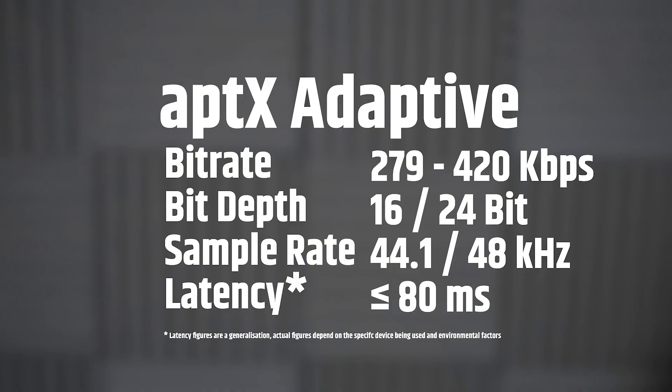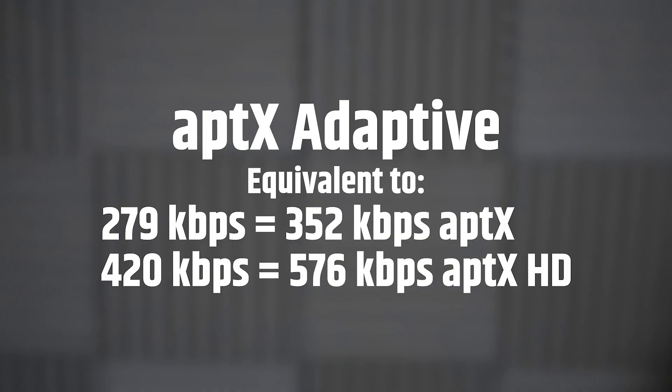Next up, we have AptX Adaptive, the newest next-gen version of AptX, which aims to provide a more stable and scalable low-latency codec with no compromise to fidelity. AptX Adaptive supports an adaptive bit rate scaling dynamically between 279 kbps and 420 kbps, as well as both 16 and 24-bit depths and 44.1 and 48 kHz sample rates. Qualcomm claims audio fidelity equivalent to AptX at 352 kbps and AptX HD at 576 kbps, but at lower bit rates. At the very least, AptX Adaptive looks to replace SBC, AptX, and AptX LL. Latency is around 80 milliseconds.